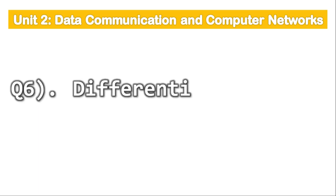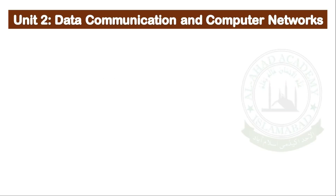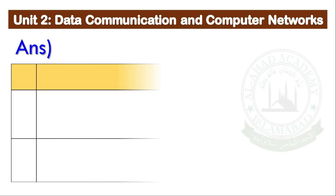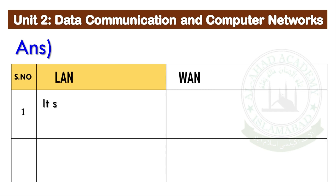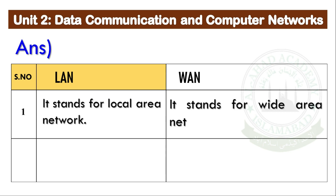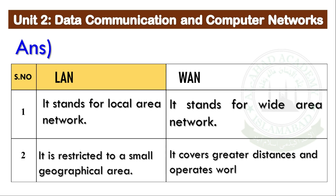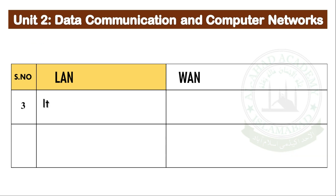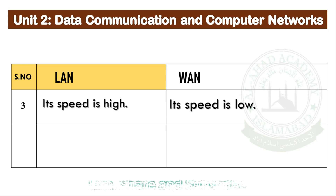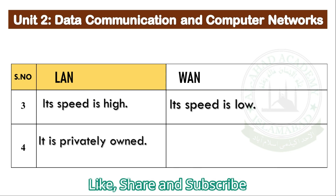Question number 6: Differentiate between LAN and WAN. LAN stands for local area network; it is restricted to a small geographical area, its speed is high, and it is privately owned. WAN stands for wide area network; it covers greater distances and operates worldwide, its speed is low, and it may be either public or private.